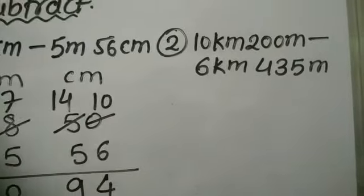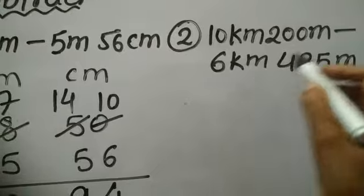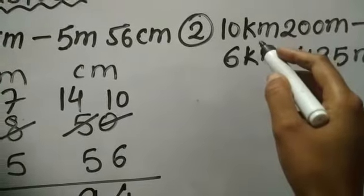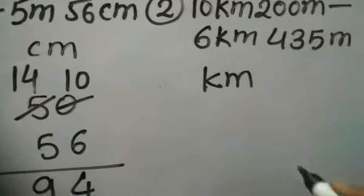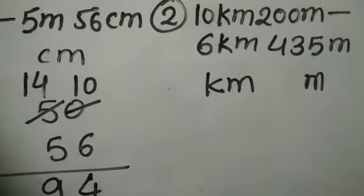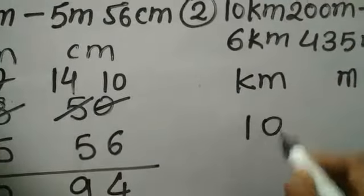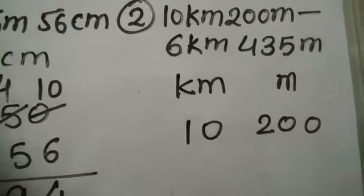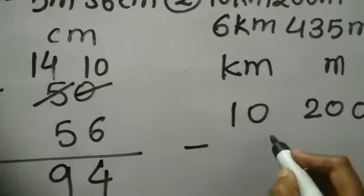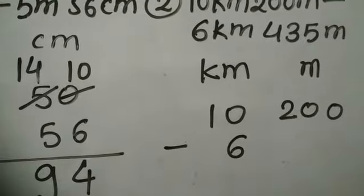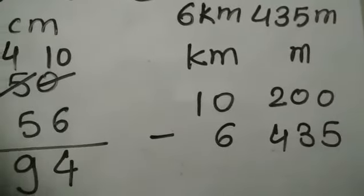Now let us do the second example. What is given? 10 kilometer 200 meter minus 6 kilometer 435 meter. Here the units used are kilometer and meter, so here we make two columns. First is of kilometer and the second is of meter. 10 I am writing in the first column and 200 I am writing in the second column. Minus 6 kilometer 435 meter — 6 at the ones place in the first column and 435 in the second column.